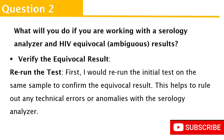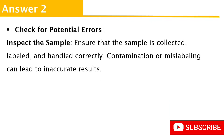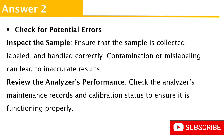It is also important to check the possibility of potential errors and rule them out. Look at the sample — is there anything wrong with it, such as mislabeling or contamination? If nothing is wrong with the sample, you might need to review other processes. Check the analyzer: is it working the way it's supposed to? This is where you look at maintenance records and calibration methods. If there are non-conformities, carry out maintenance and calibration, then repeat the test.